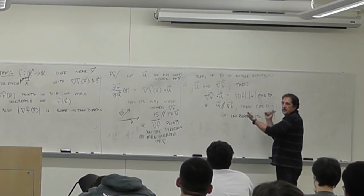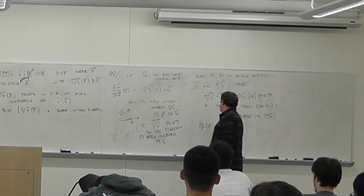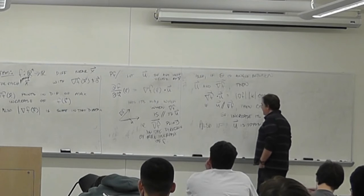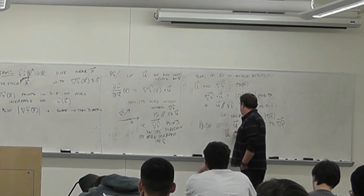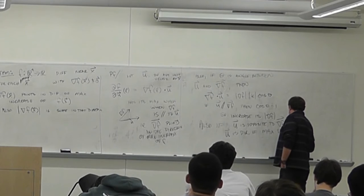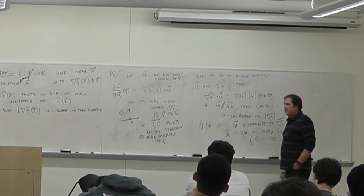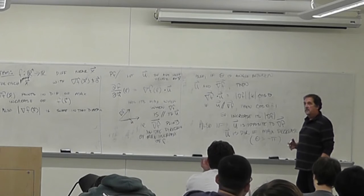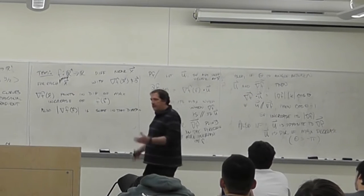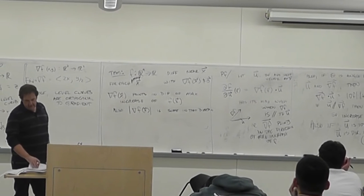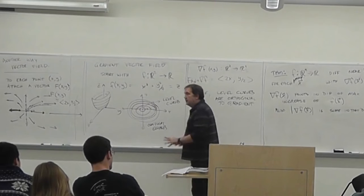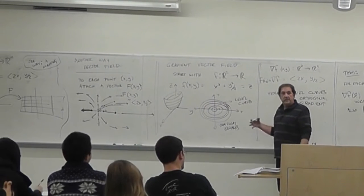Also, if u points opposite to the gradient — so θ = π — that's the direction of maximum decrease. This tells us the gradient arrows are orthogonal to the level curves and point the steepest way up the surface. It's important that we have a non-zero gradient; otherwise there may be multiple steepest directions.